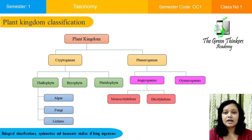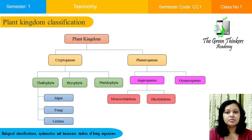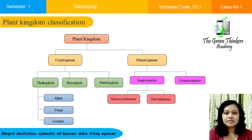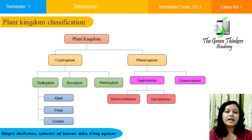Examples of Pteridophyta are various kinds of ferns. Phanerogamae is further divided into two divisions: Gymnosperms and Angiosperms. Gymnosperms are naked seed-bearing plants, such as Pinus and Cycas. Angiosperms are plants that have seeds enclosed in fruits, and they are further divided into two classes: Monocotyledon, meaning one seed-leaf plants (examples: wheat, rice), and Dicotyledon, meaning two seed-leaf plants (examples: mango, peas).